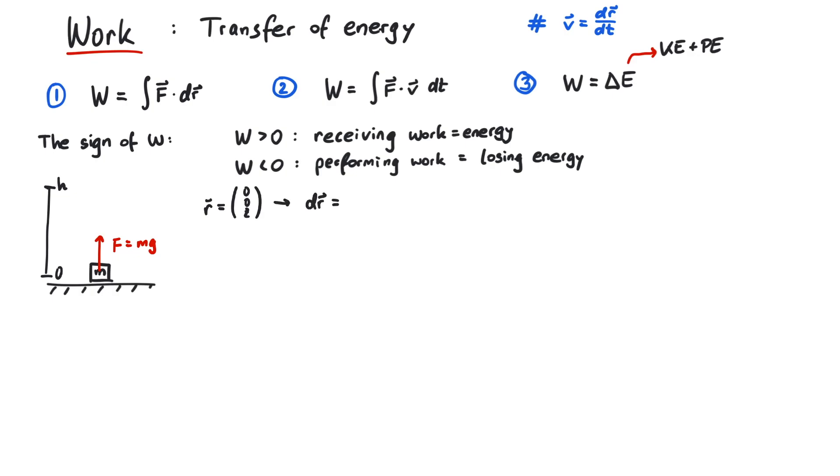This means our differential path is just zero zero dz. And the dot product simplifies to the integral between zero and h over mg times dz. This yields mgh, which has units of energy. The work we just calculated is positive, therefore it is absorbed by the object as potential energy. Since forces always come in pairs, thanks to Newton's third law, the same process that led to an increase of energy must lead to a decrease of energy somewhere else.